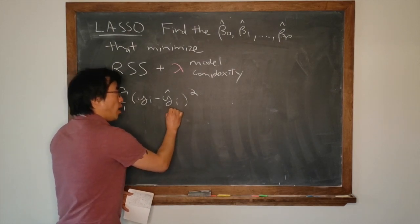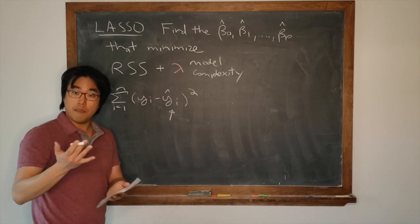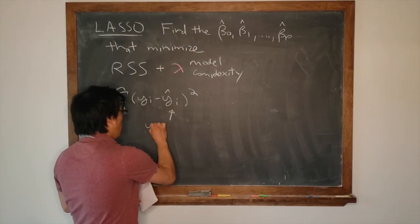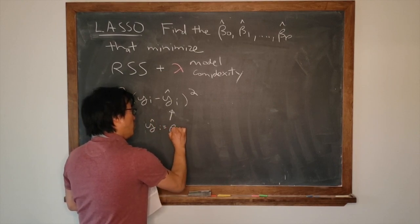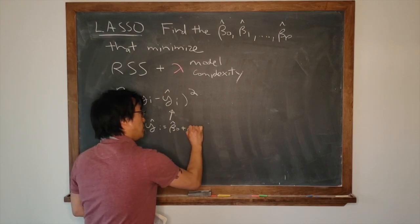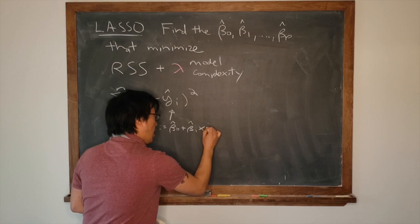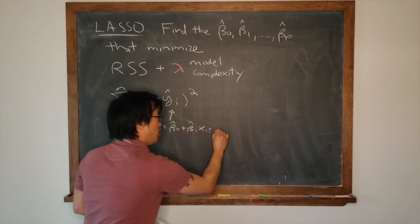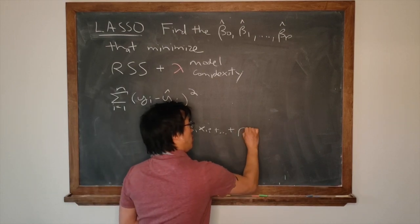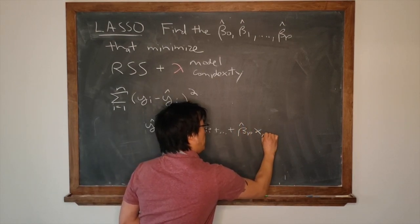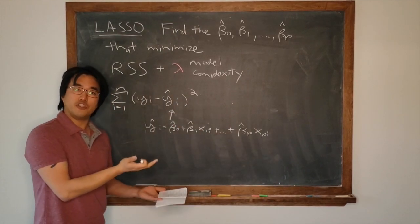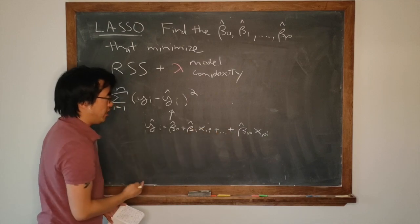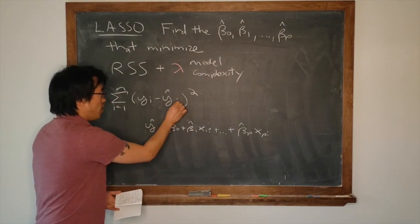But where do these y hats come from folks? That's why we had multiple regression as a prereq for this course. Y_i hat is equal to beta naught hat plus beta one hat times x_1i, the ith value of the first predictor, plus dot dot dot plus beta_p hat times x_pi. Just plug in the values of your fitted betas and match them up with the various predictors.